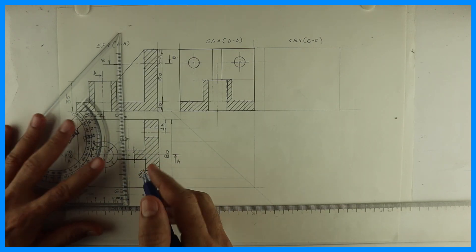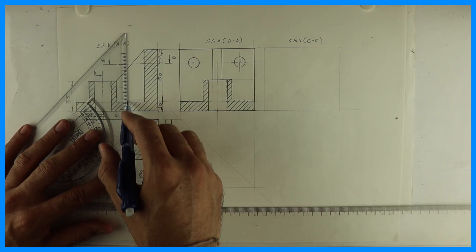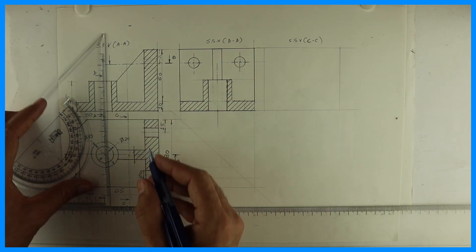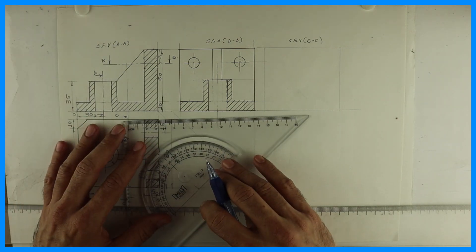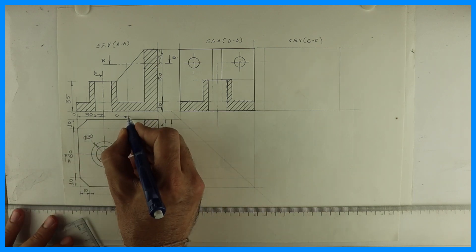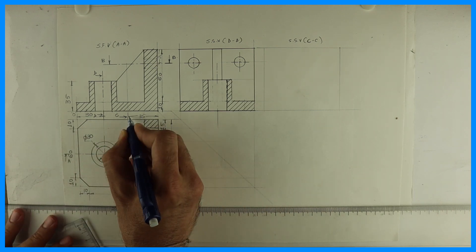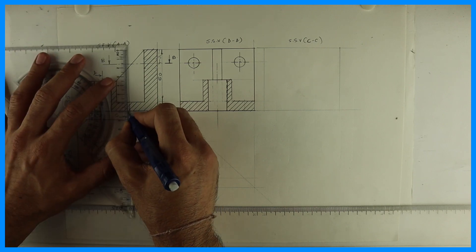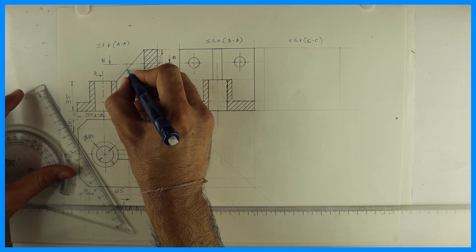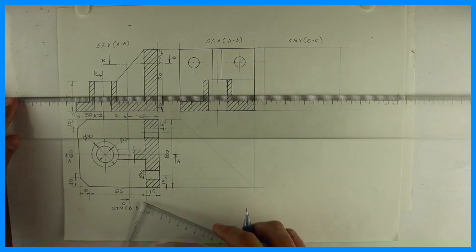So you will come to know where it is cutting the rib from front view. Let's say this distance is 35 — it's here. So from there we need to project.